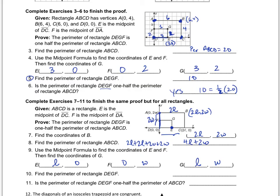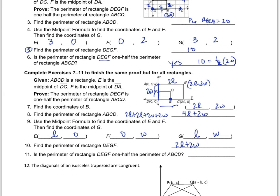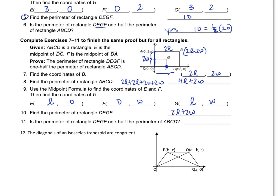And then to find the perimeter of DEGF, well, that's just going to be 2L plus 2W. And is this now 1 half the other one? So let's slide this up a little bit. So is the perimeter of DEGF one half the perimeter of ABCD? Yes, because 1 half of 4L plus 4W equals 2L plus 2W.